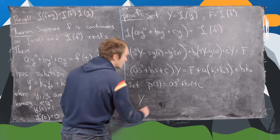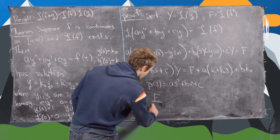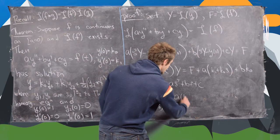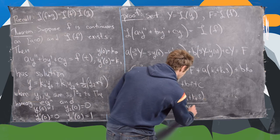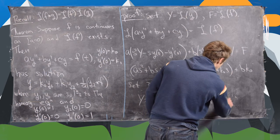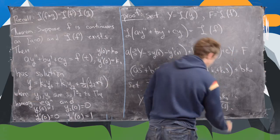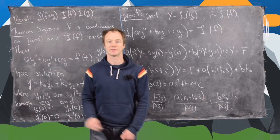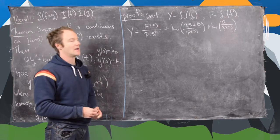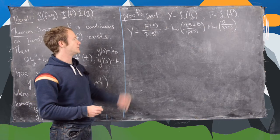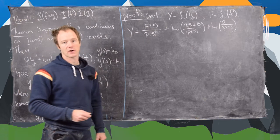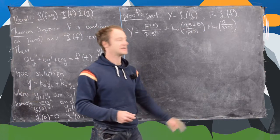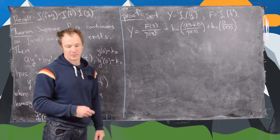This allows us to write Y = F/P(s) + (Ak0·s + Ak1 + Bk0)/P(s). Rearranging slightly, we have: Y = F(s)/P(s) + k0·(As + B)/P(s) + k1·(A/P(s)).